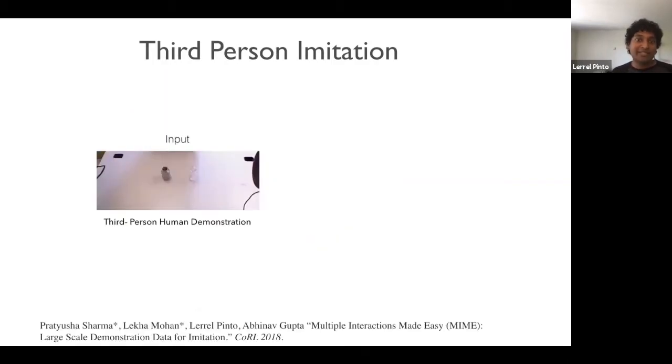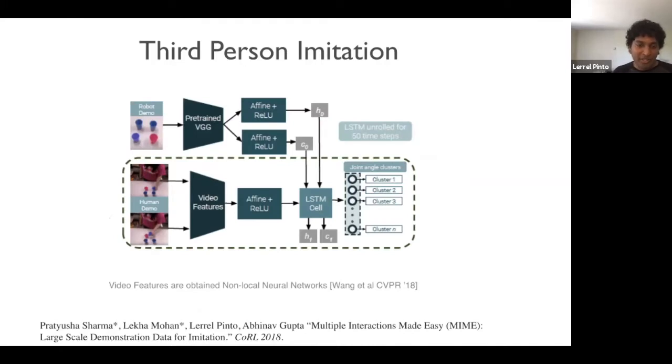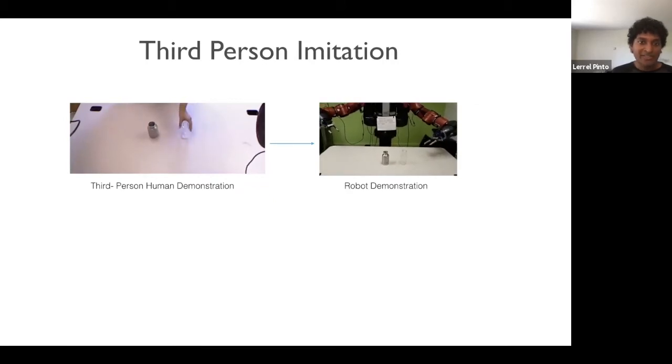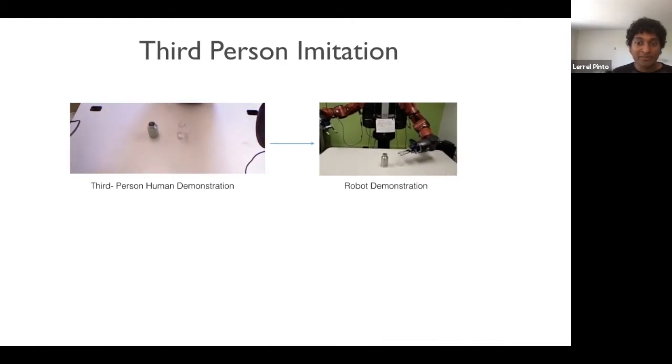The next type of problems we look at using MIME is third-person imitation, where the goal over here is given an input of a human solving a task, we want the robot to solve the same task. So to do this, we use a simple behavior cloning architecture, where the input is a video of a human solving the task. From this video, we extract video features that then go into an LSTM cell that finally outputs joint angles that the robot needs to follow. Now in this example, we run this behavior cloning model on a pouring task. So on the left, you can see the third-person human demonstration for pouring, and on the right, you can see how the robot is performing the same task, where it first goes to the bottle, it picks it up, and then applies the pouring action.